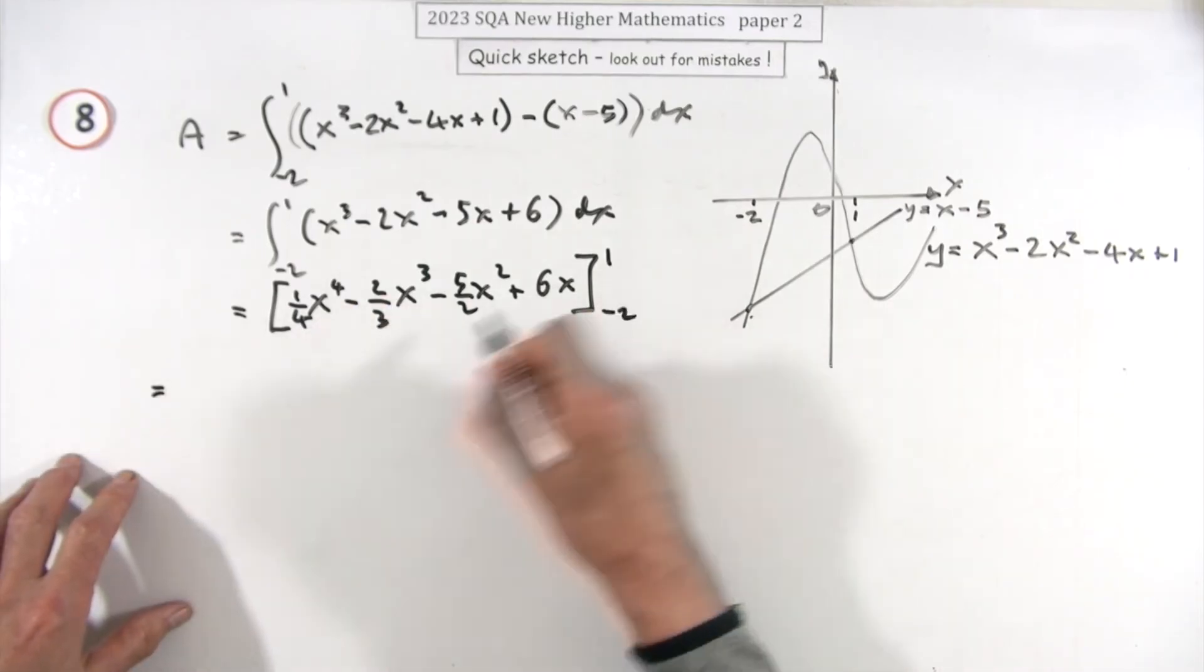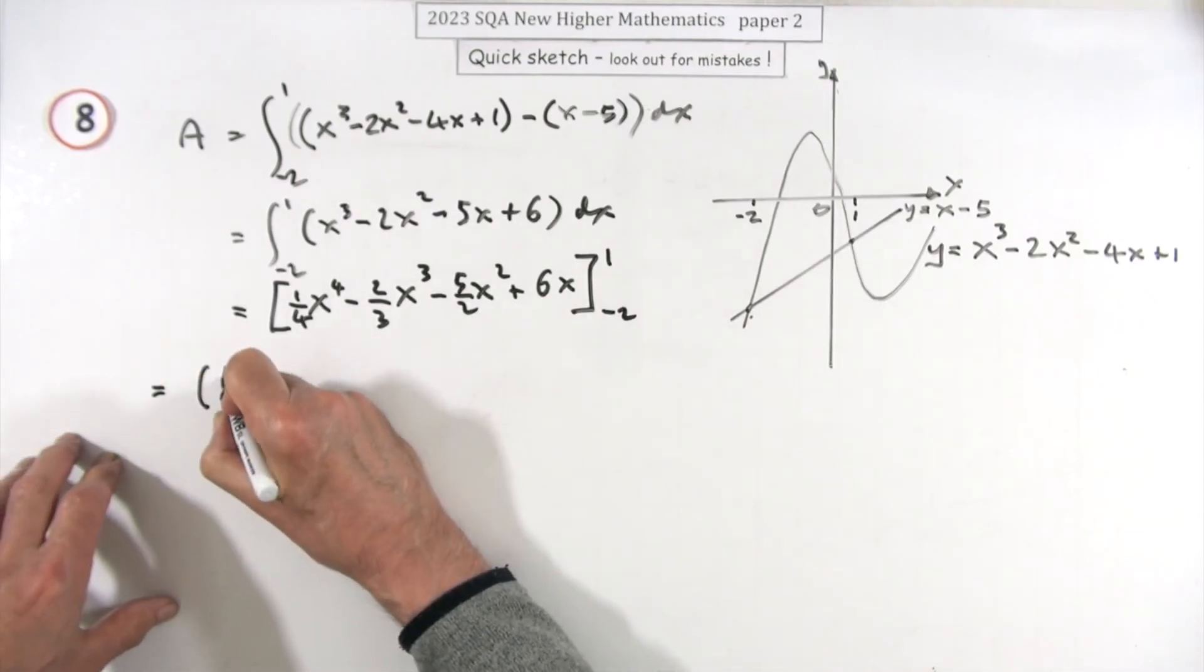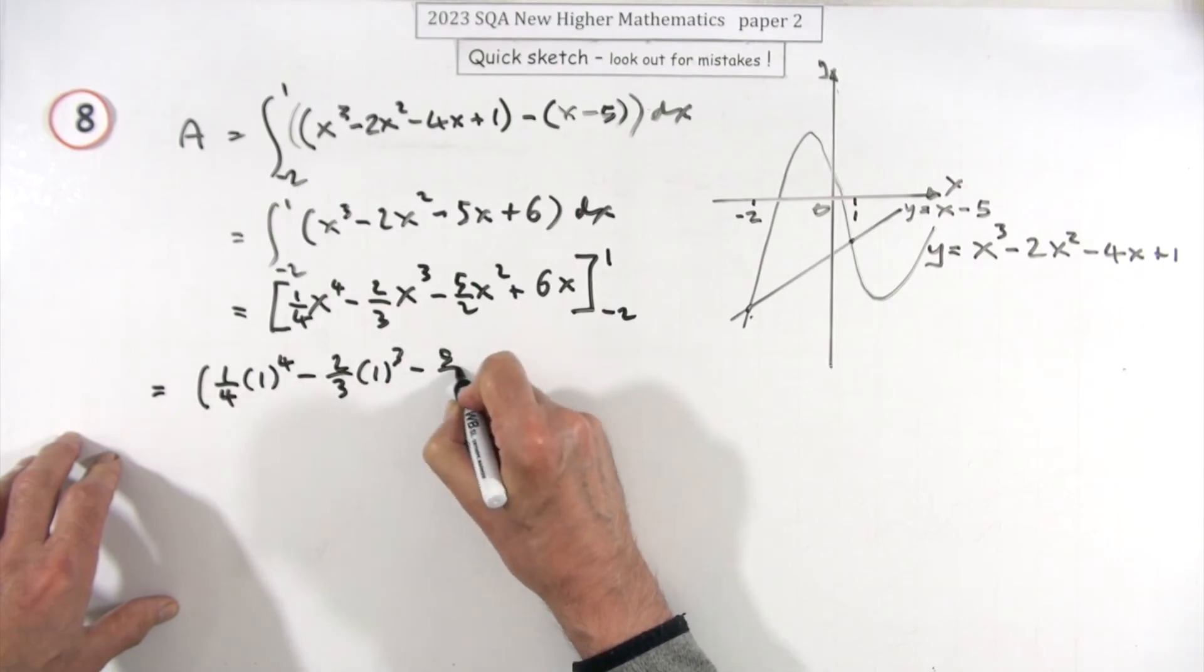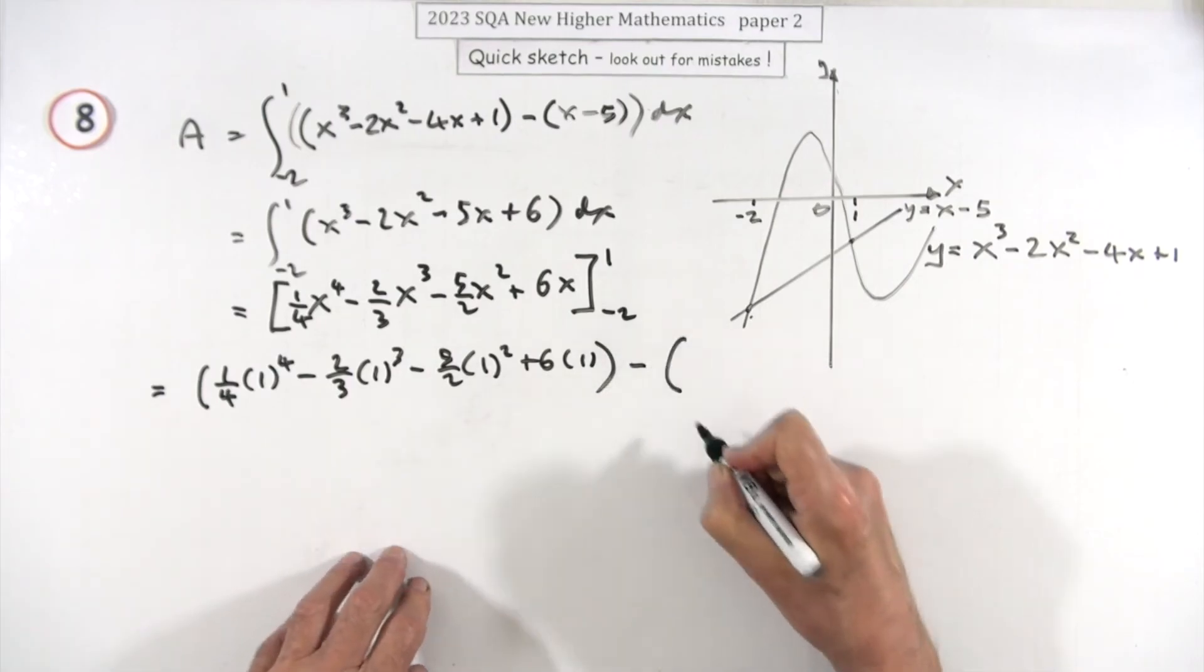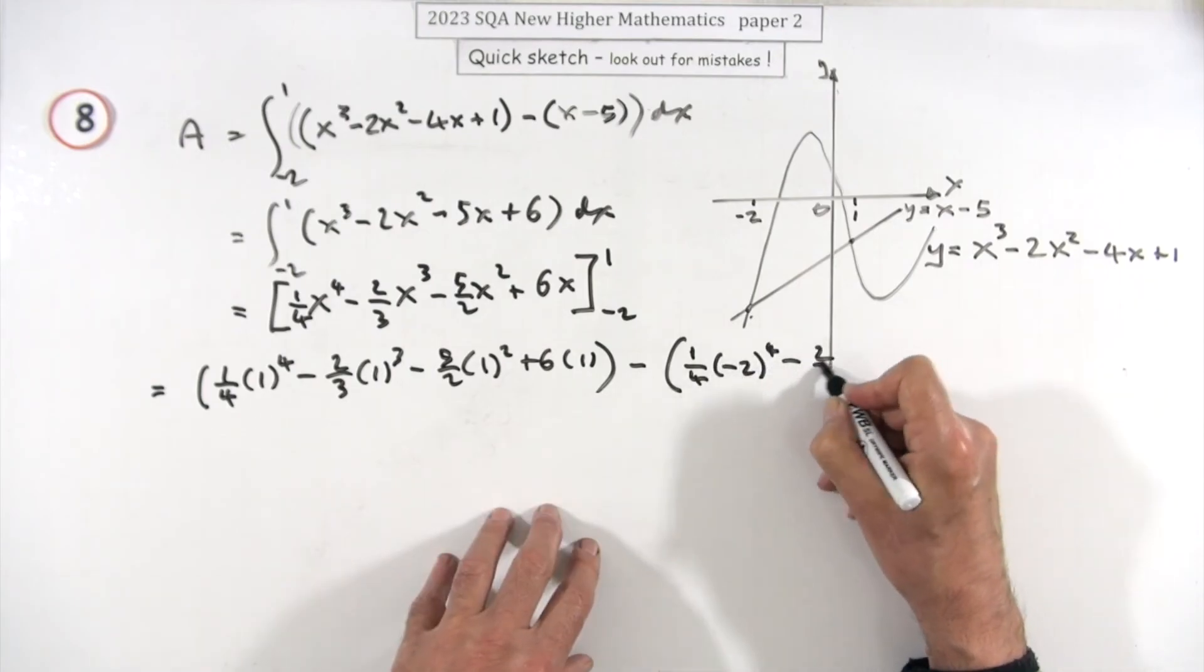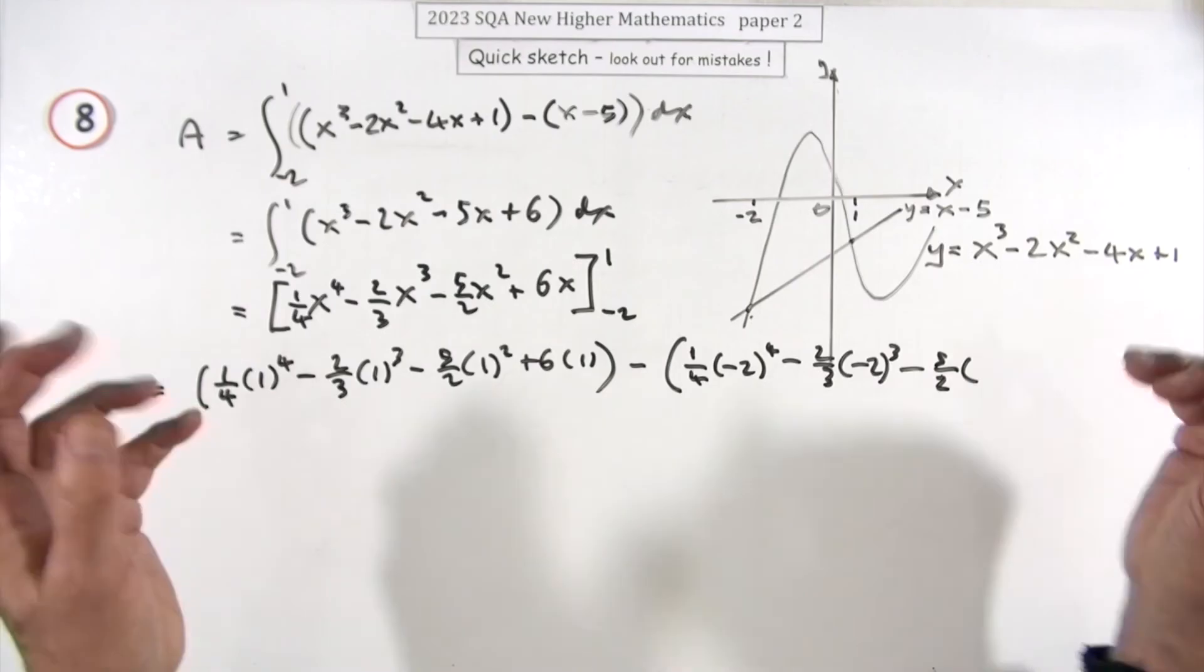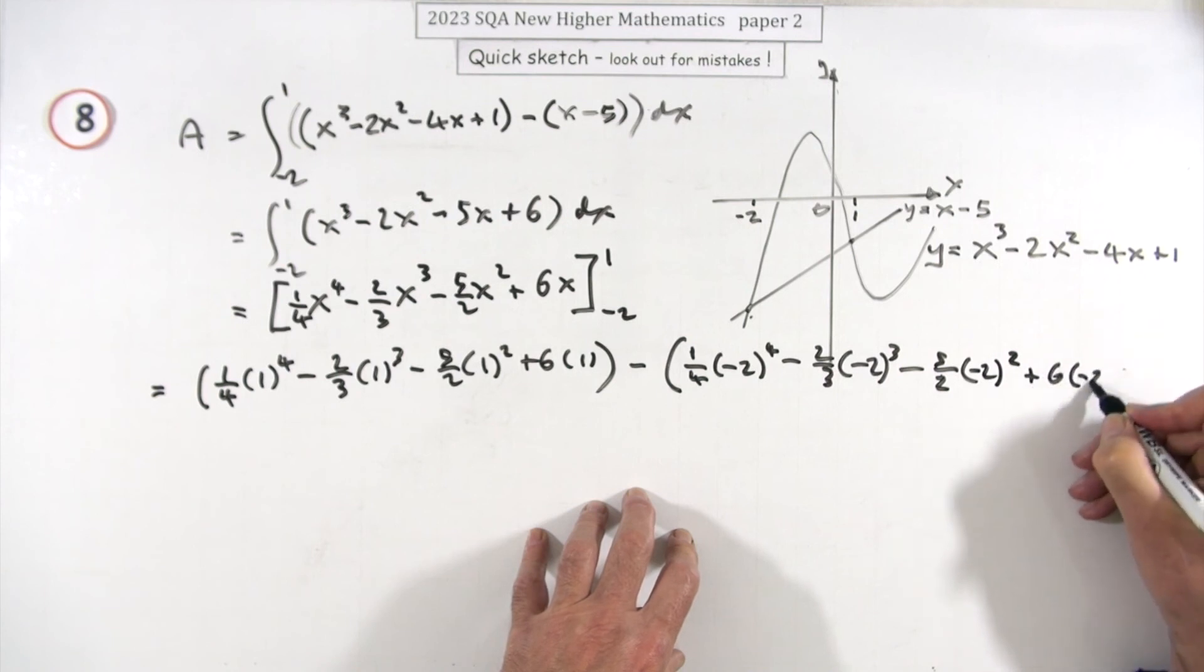So that needs to get evaluated. First of all, you evaluate it at 1, which just makes all these x's disappear effectively. You could just put down 1/4 - 2/3, etc., but I'll put it in: minus 2/3 of 1³ - 5/2 of 1² + 6 times 1. And then do it all again, and this will be the nasty bit: 1/4 of (-2)⁴ - 2/3 of (-2)³. Loads of writing—it's not any more difficult because there's loads of writing, it's just annoying, it's just cumbersome. Minus 5/2 of (-2)² + 6 times (-2).